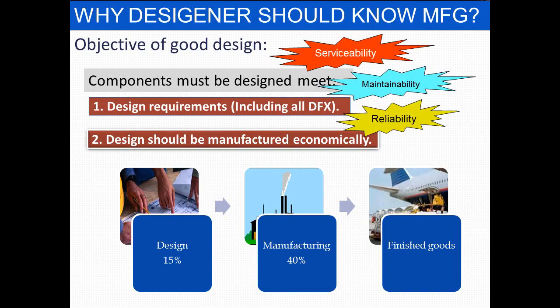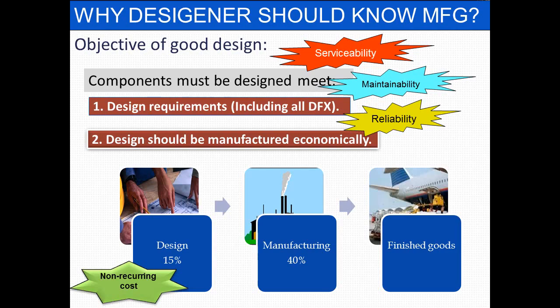So 40 plus 15 together become 55 percent — where is the other 45 percent? We'll look into that. The 15 percent design cost is a non-recurring cost, meaning it is a one-time cost spent during the product life cycle. Whereas the 40 percent cost spent on manufacturing is a recurring cost — that is, every time a part is produced, this 40 percent cost is associated with the finished goods.